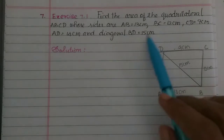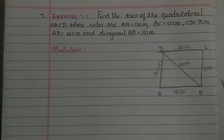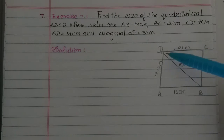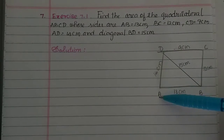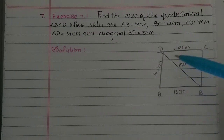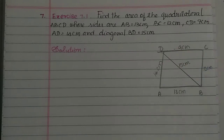So if you have these measurements: AB is 13 cm, BC is 12 cm, CD is 9 cm, AD is 14 cm, and BD is the diagonal, so the diagonal is 15 cm.